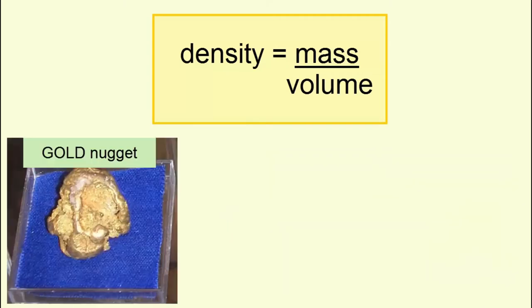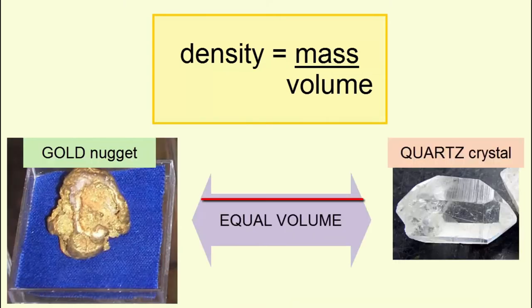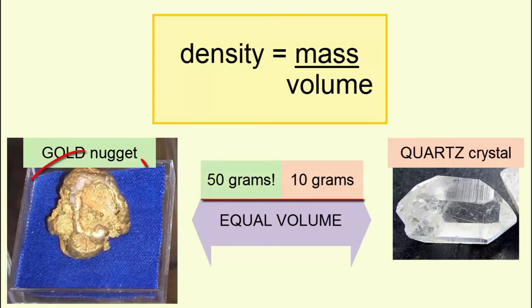For example, here's a gold nugget that is the same volume as this quartz crystal. Which is densest? Because the gold nugget is almost five times more massive for the same volume, it's denser.